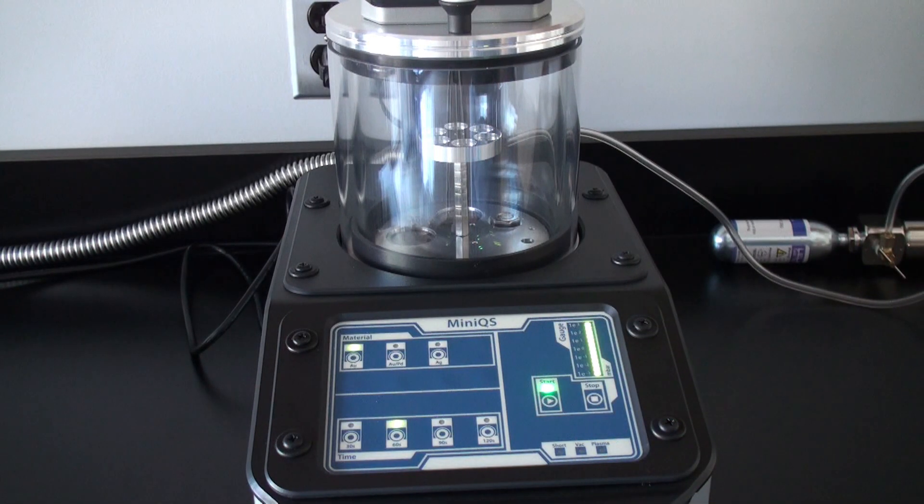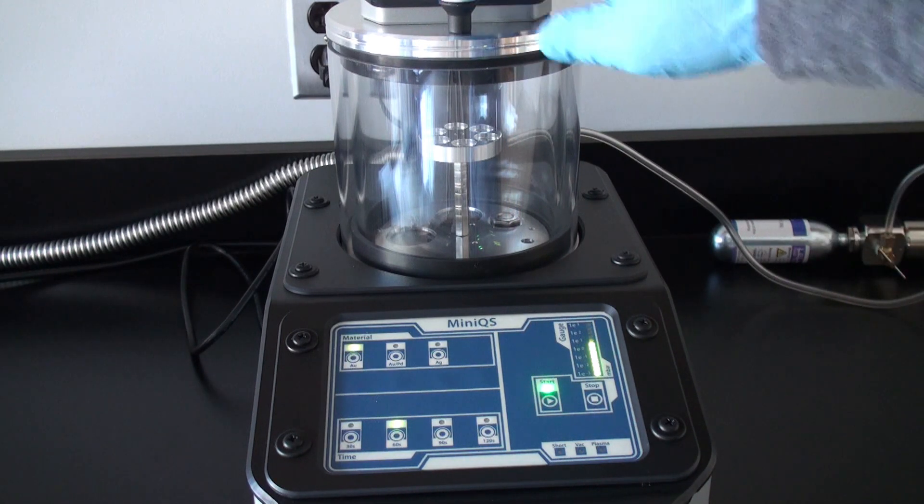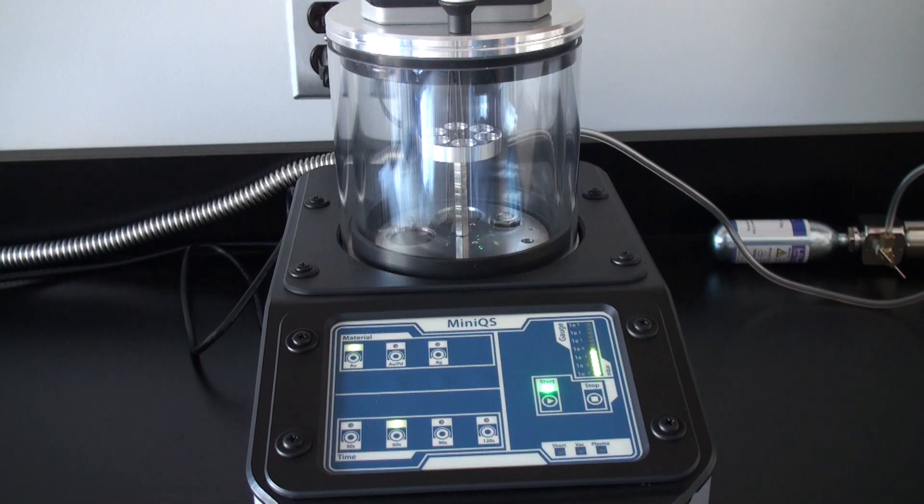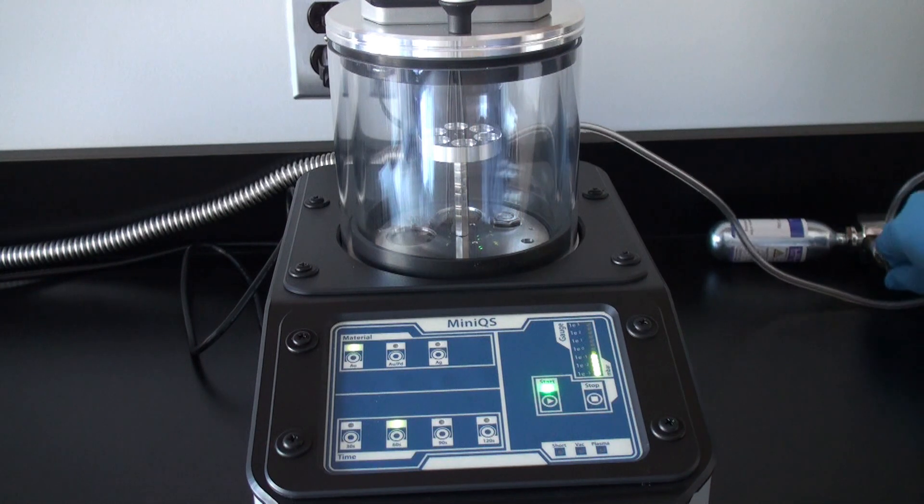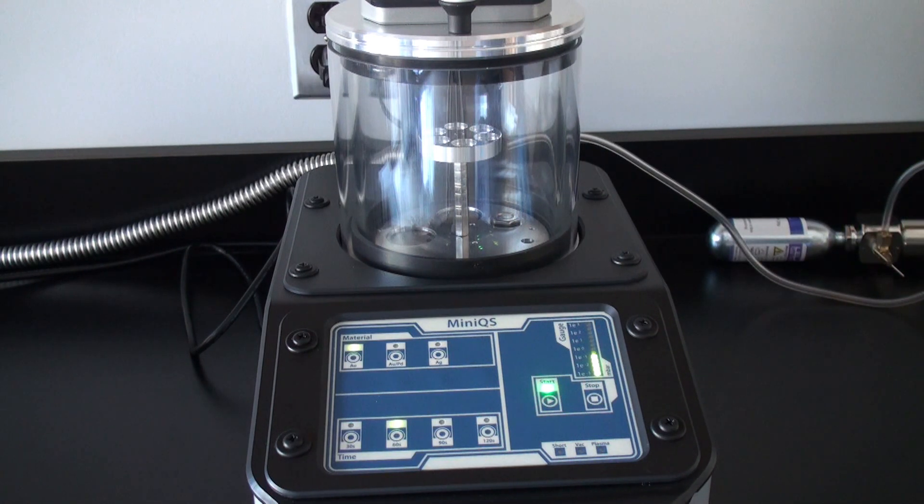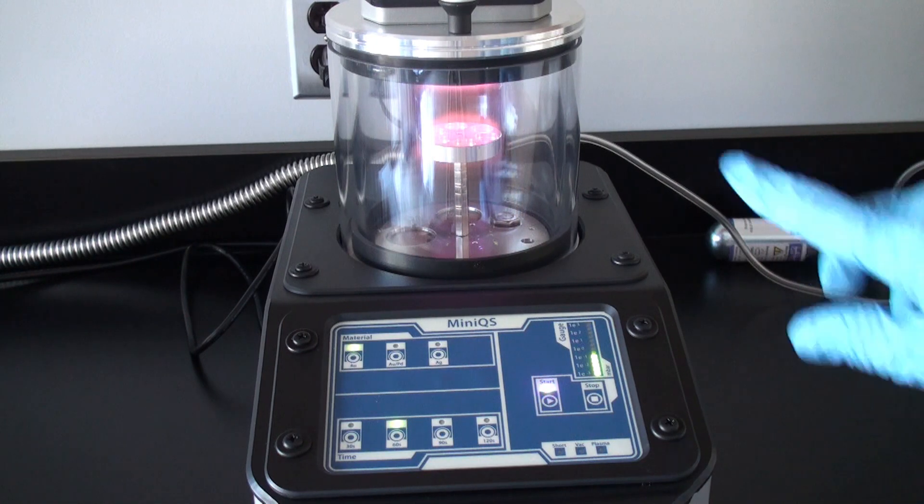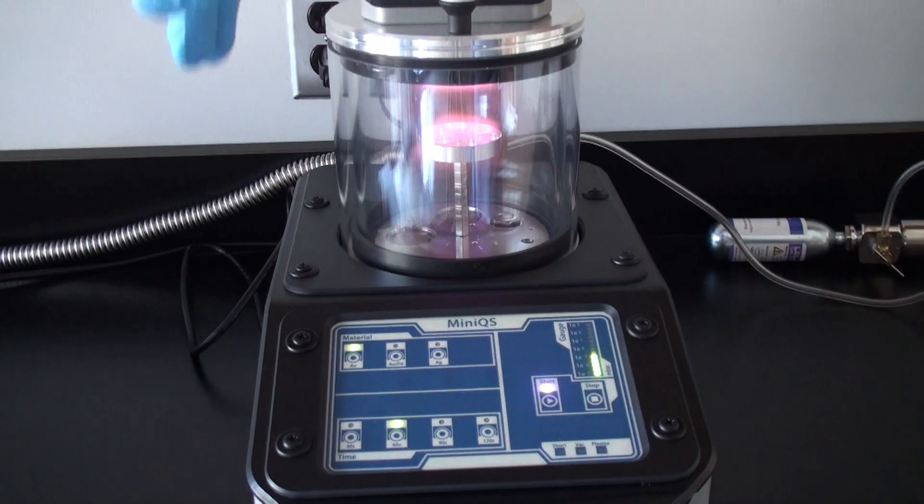The system will automatically pump down to the proper vacuum level. When it reaches the predetermined vacuum level, it will bleed argon gas into the system. Once the system determines that the pressure is stable,